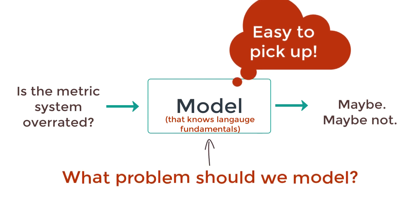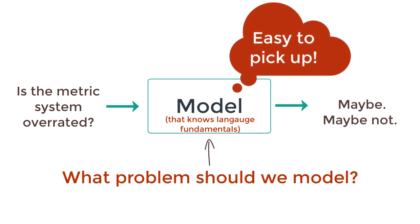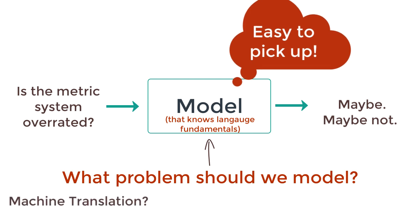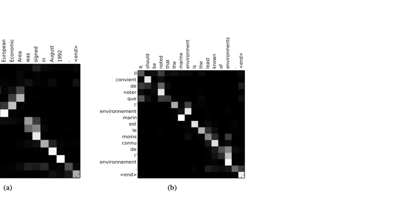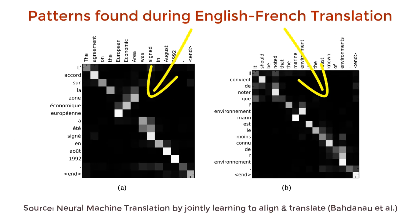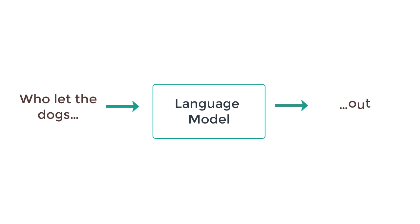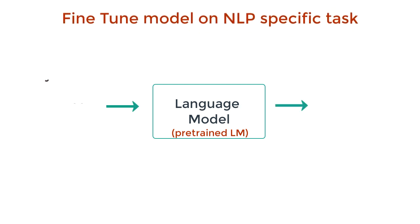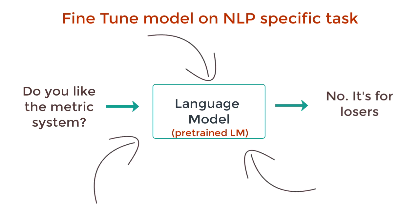But what NLP problem captures the fundamentals of language? Is it machine translation, or question answering, or chatbots? Well, none of those really. Because models on these problems tend to learn patterns in data rather than the languages themselves. The problem that captures language the best is language modeling. Given a part of a sentence, predict the next word. It captures contextual cues. Once we pre-train a language model, we can then use transfer learning to fine-tune this model on a host of other NLP tasks.